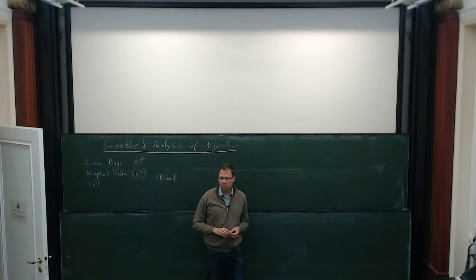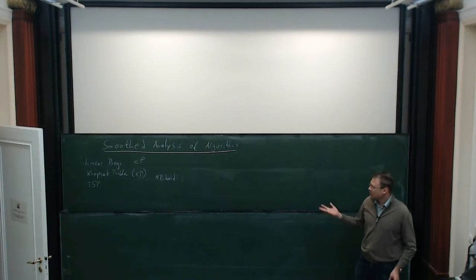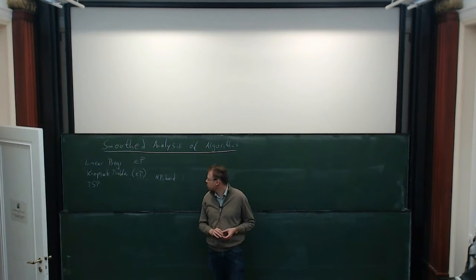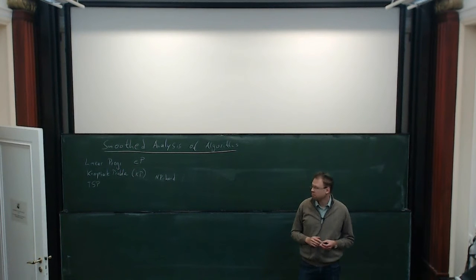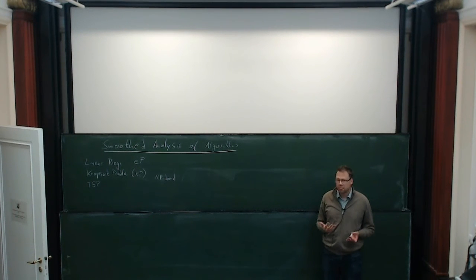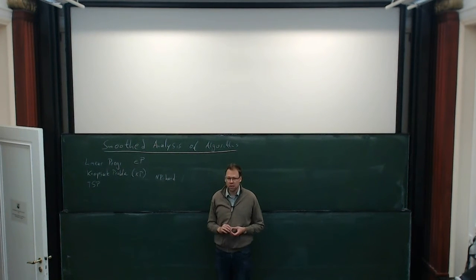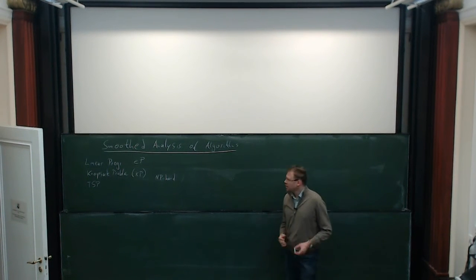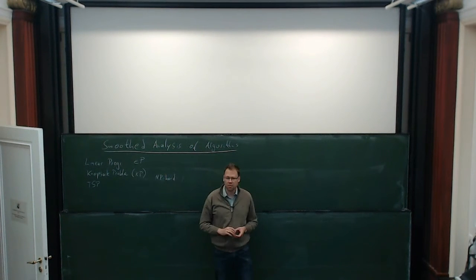For the knapsack problem, we can say that's probably one of the easiest problems you can encounter in practice. If you create random instances or take some instances from applications, you will see that you can solve these instances really quickly, optimally. To give you a feeling for that: if you create random knapsack instances with, say, 30 million items, you can solve them within a few seconds optimally, which is quite good for an NP-hard problem.